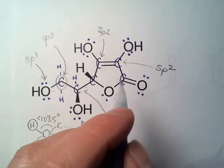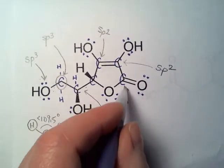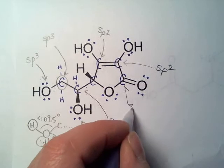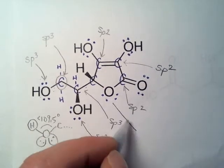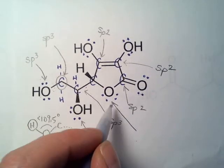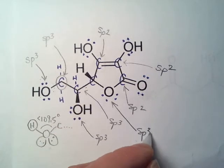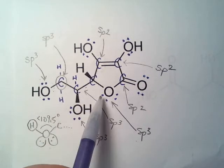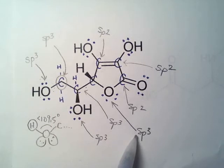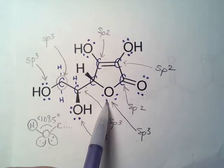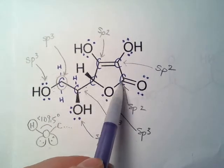So just by inspection — three groups, trigonal planar, SP2. So what about this oxygen? It has 2, 3, 4 groups — SP3. Electron group geometry would be tetrahedral because it's four groups. Two of them are lone pairs, so this is just bent.